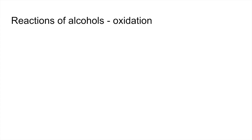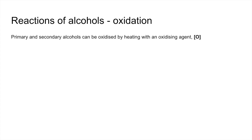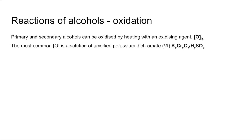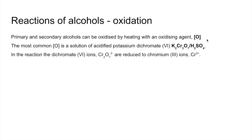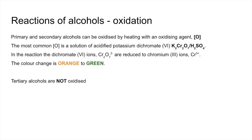The final reaction is oxidation. Primary and secondary alcohols can be oxidized by heating with an oxidizing agent, represented as [O] in equations. The most common oxidizing agent is acidified potassium dichromate(VI), K2Cr2O7, with sulfuric acid providing the acid conditions. In the reaction, dichromate(VI) ions are reduced to Cr3+ ions, giving a color change of orange to green. You can use other dichromates such as sodium dichromate. Tertiary alcohols cannot be oxidized.